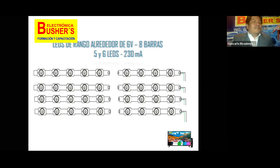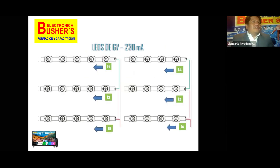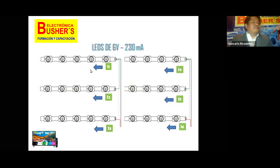Si la anterior tira de LEDs aguantaba más de 600 miliamperios, las nuevas barras soportan tres veces menos corriente. Lo que vamos a hacer es redistribuir el orden de estas nuevas tiras de reemplazo para conseguir que la sumatoria de la corriente que circula por cada tira nos dé los 600 y tantos miliamperios a los que va a ajustar la fuente del televisor 4K. Vamos a agrupar de esta forma: 3 barras de 5 legs en paralelo y 4 barras de 4 legs en paralelo, y la sumatoria de cada barra nos dará más de 600 miliamperios.